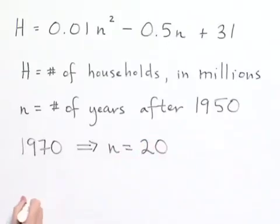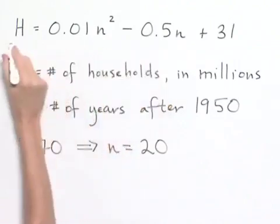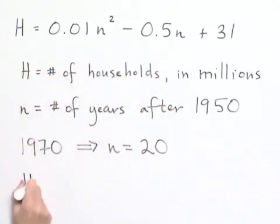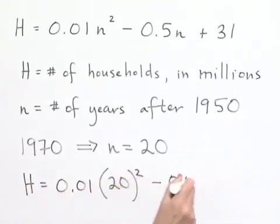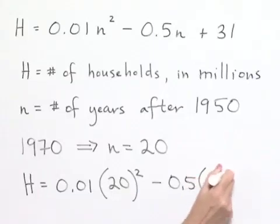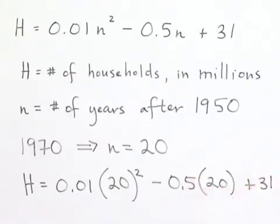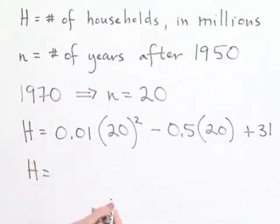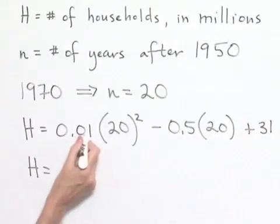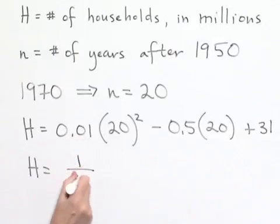Substituting this value of n in the equation, H equals one hundredth times 20 squared minus five tenths times 20 plus 31. For ease of calculation, I'm going to change the decimals into fractional format. One hundredth can be written as 1 over 100.